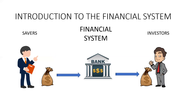So the financial system is an intermediary between savers and investors, so that funds can flow from savers to investors and both parties benefit. Savers can earn interest from their deposits in financial institutions, and investors can earn profit from their investments by borrowing from financial institutions.